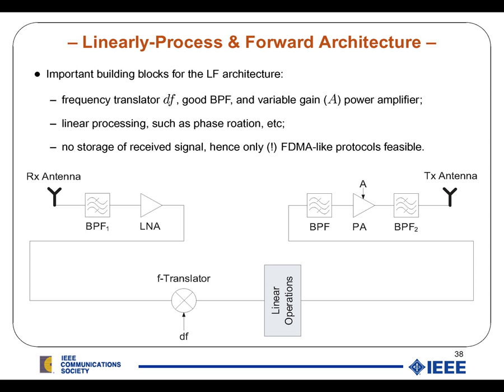For the linearly processed and forward architecture, you do the same as for the Amplify and Forward architecture, with the only exception that you insert a linear operations block, which could be something like a phase rotation and a little scaling, which is fairly easily realized. However, you cannot do things like space-time block codes that use a delay of the signal and then a phase rotation. So an Alamouti space-time block code is not implementable, but you can implement simple linear operations such as phase rotation to facilitate beamforming. Again, no storage, hence only FDMA-like protocols.